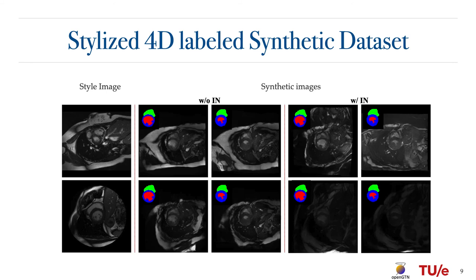In the VAE setup, we altered the architecture of the encoder by removing the instance normalization layers. The encoder is then in charge of capturing both the global and local appearance of its input image. This setup is useful in controlling the style of synthetic images in the reconstruction of unlabeled surrounding organs of the heart. When the instance normalization layers are kept, only the global style is transferred to the output image.